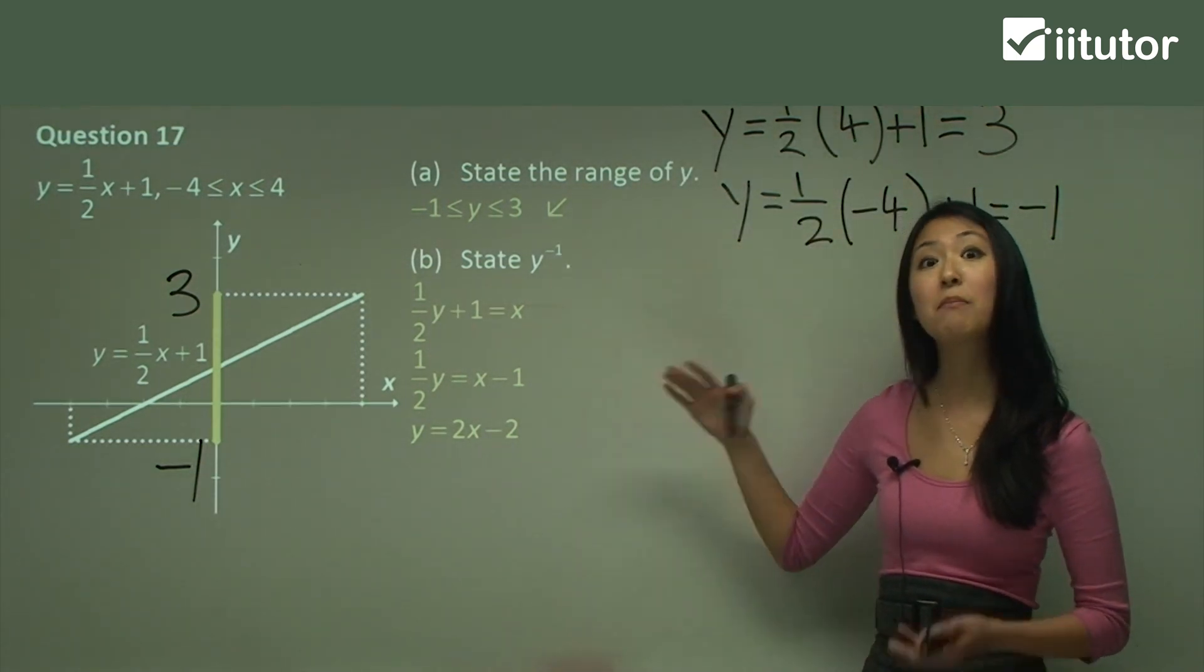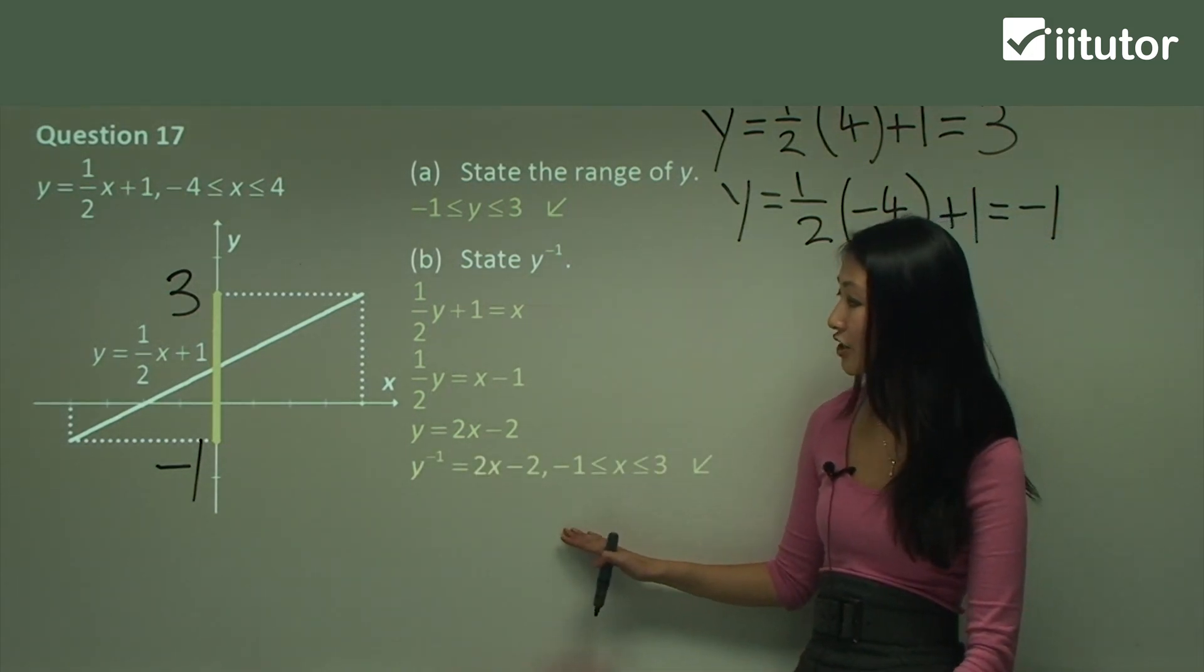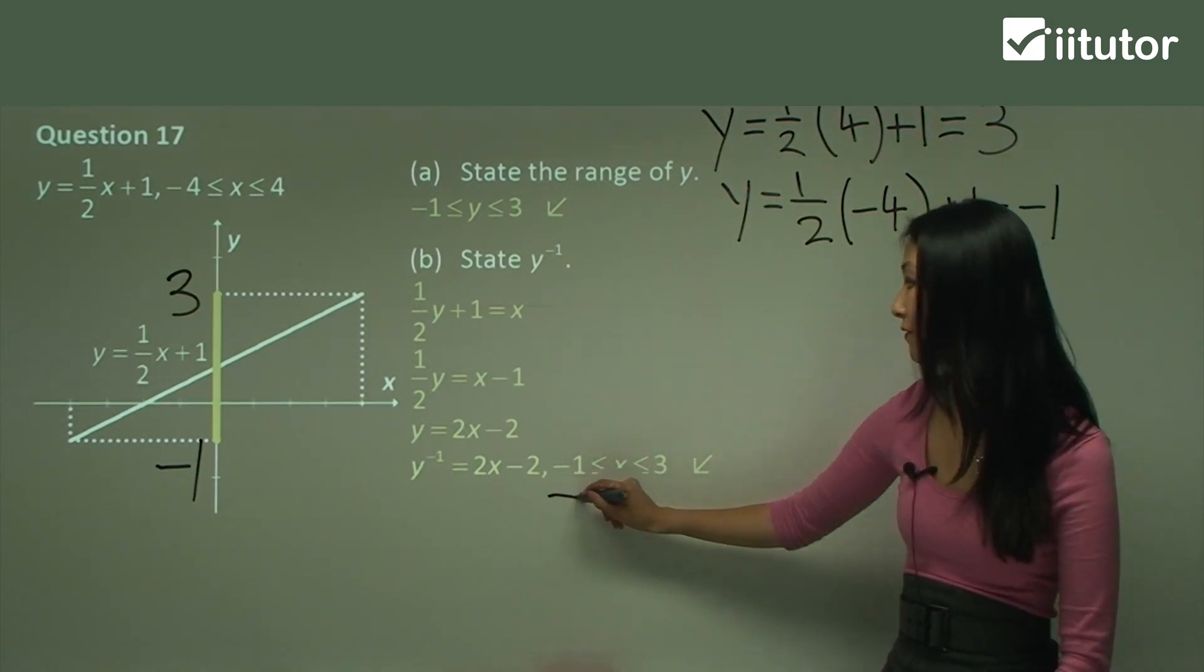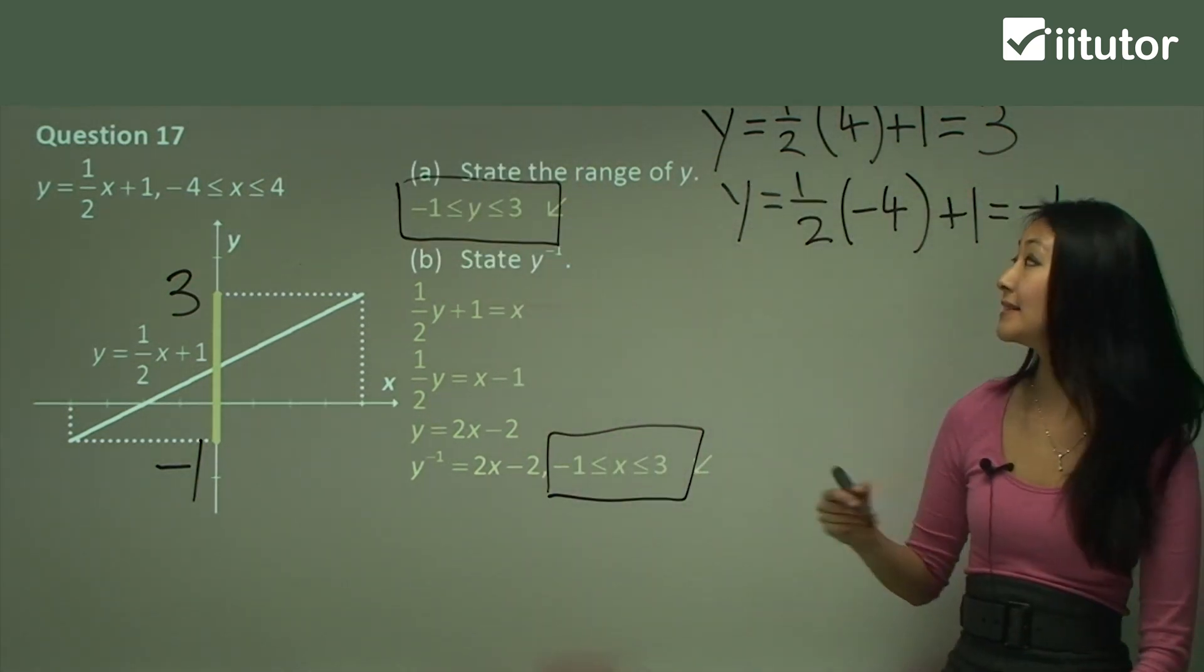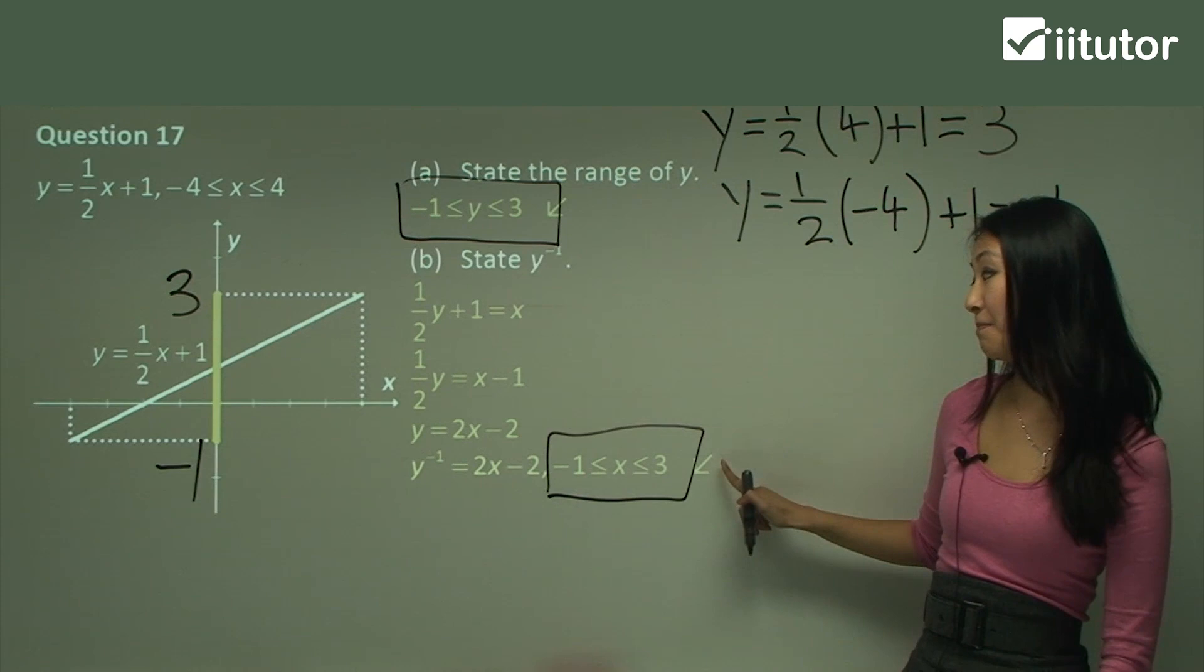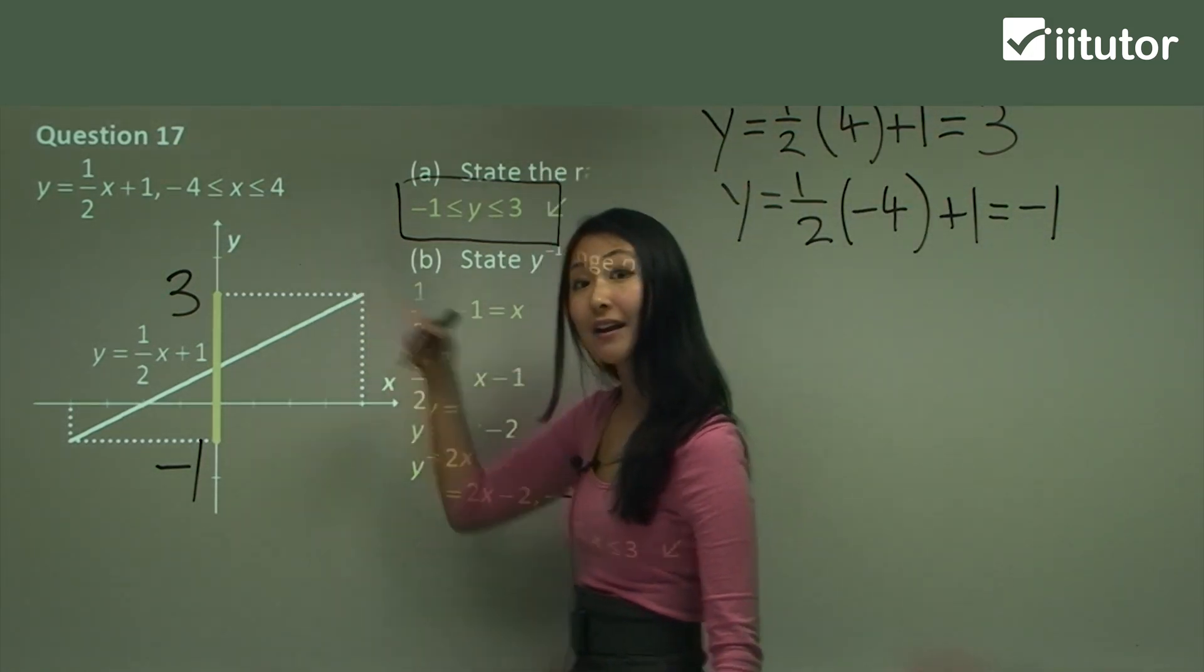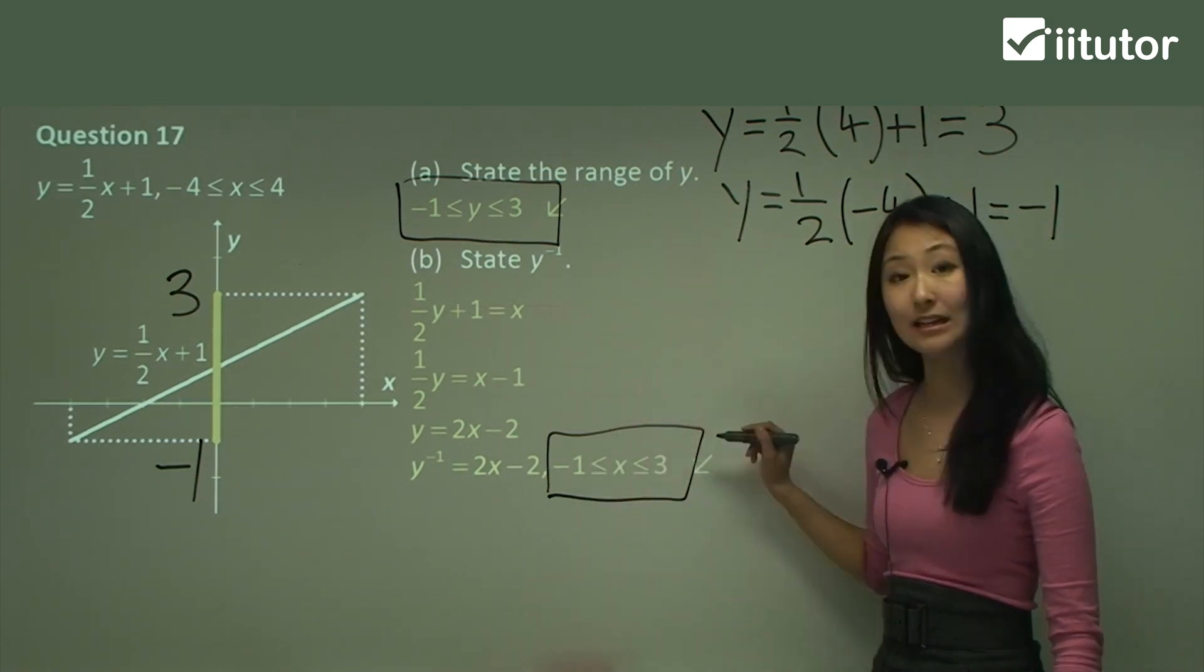So therefore, the inverse of the function is 2x minus 2, but only for x is between negative 1 and 3. And where we've gotten this from is the range that we had up here. Yeah? But instead of y, I've changed that to x. Because the range of the original has now become the domain of the inverse. So the most important point I want you to take from this question is when the question is given to you with a specific domain and you want to find the inverse of the function, you must also specify for which domain it is said to be for.